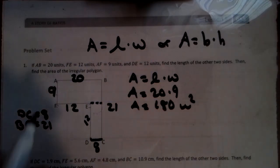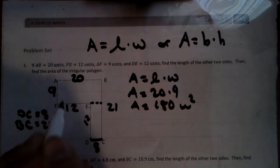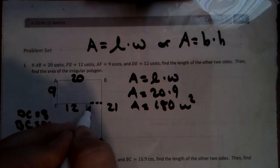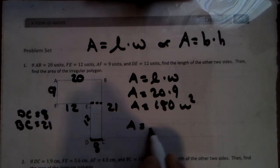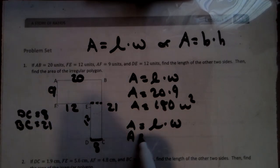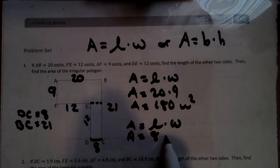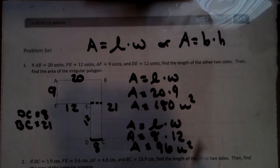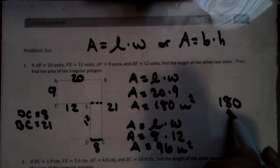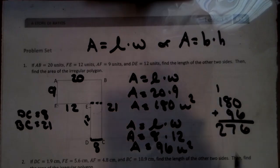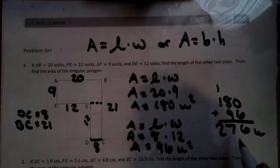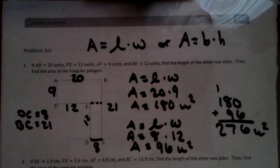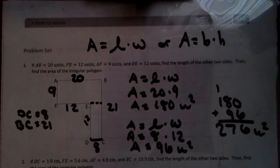So this full thing right here is 180. Now we're going to use a 12 by 8. Area equals length times width. Area equals 8 times 12. Area equals 96 units squared. Then I have to add the two pieces up. 276 units squared.